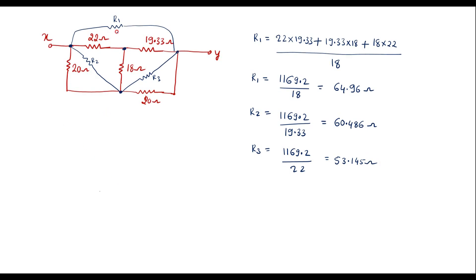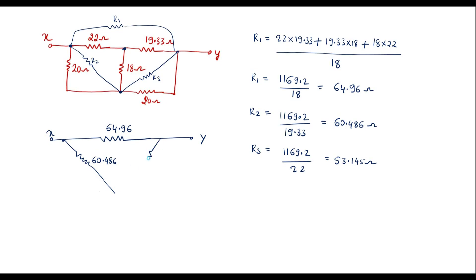Now let me redraw the circuit by representing R1, R2, and R3. Here this is terminal X. R1 value is 64.96 ohm. This is terminal Y. R2 value is 60.486 ohm. R3 value is 53.145 ohm. And here we have 20 ohm connected to this terminal, and here we have 20 ohm connected to this terminal. This is the reduced circuit. From this circuit we can observe that these two resistors are in parallel and these two resistors are in parallel.